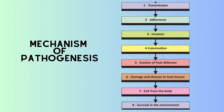The third is invasion — the process by which the pathogen enters host cells, whether through invasion or another process. The fourth is colonization. The fifth is evasion of host defense — how immune system cells eliminate the pathogen from the human body. The sixth is damage and disease to host tissues.